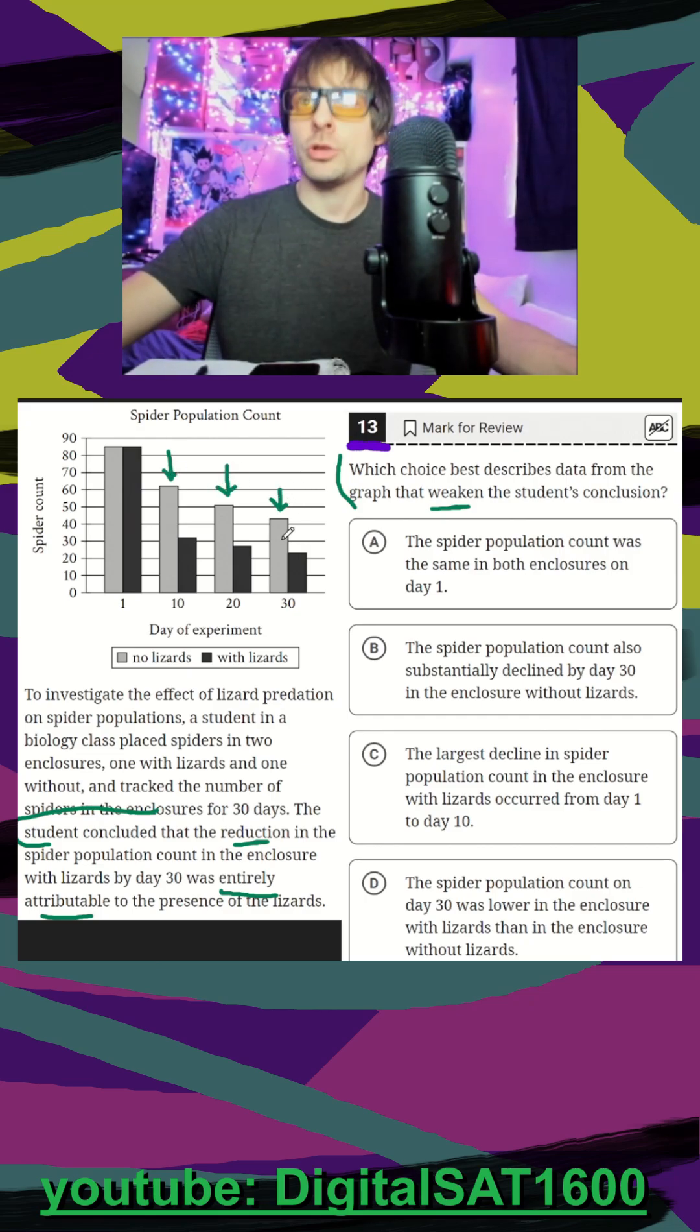Well, that's our answer. That's what we're looking for because that would go against the student's conclusion. So in A, the spider population count was the same in both enclosures on day one. That's not what we're looking for. We're looking for the reduction after day one, so we care about how it's changing beyond this. We don't like A here.